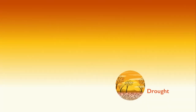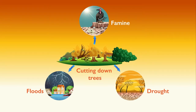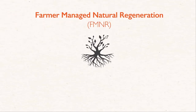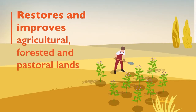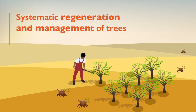Drought, famine, and floods are a result of cutting down trees. Farmer Managed Natural Regeneration is a quick, low cost, and sustainable technique that restores and improves agricultural, forested, and pastoral lands. It involves the systematic regeneration and management of trees and shrubs from existing and living tree stems, roots, and self-sown seeds.